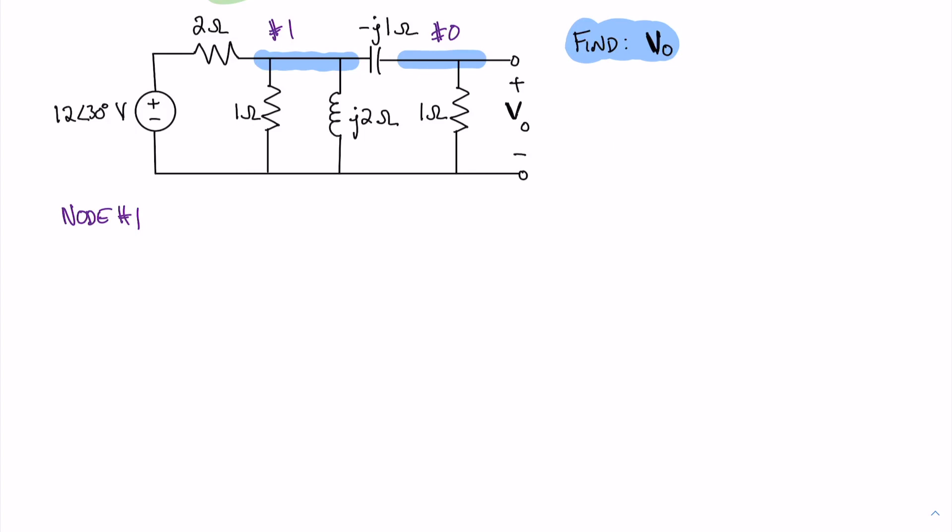For this, we have V1 minus 12 angle 30 divided by 2-ohms. For our second term, we have V1 divided by 1-ohm. Then we have V1 divided by our inductance impedance, so V1 divided by J2. Our last current is V1 minus Vout divided by minus J for the capacitor. And all of that equals 0.